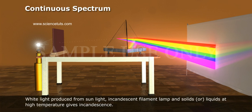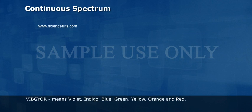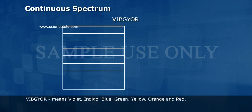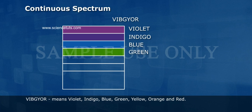White light produced from sunlight, incandescent filament lamp, and solids or liquids at high temperature gives incandescence. VIBGYOR means violet, indigo, blue, green, yellow, orange, and red.